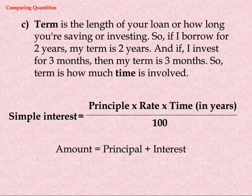C. Term is the length of your loan or how long you're saving or investing. So, if I borrow for two years, my term is two years. And if I invest for three months, then my term is three months. So, term is how much time is involved.